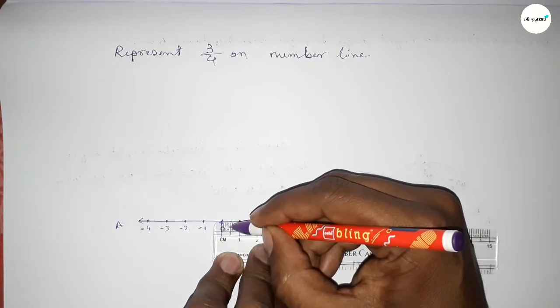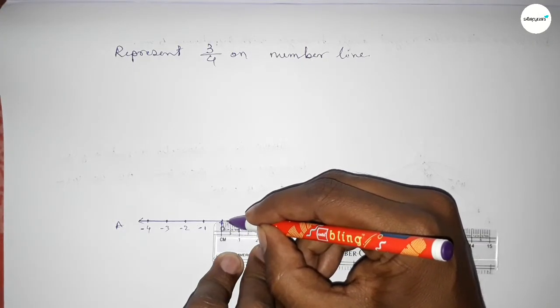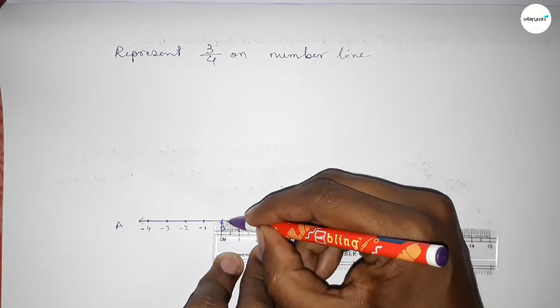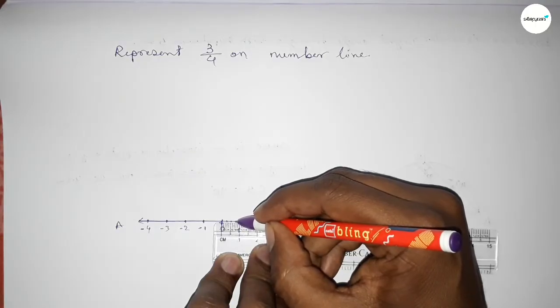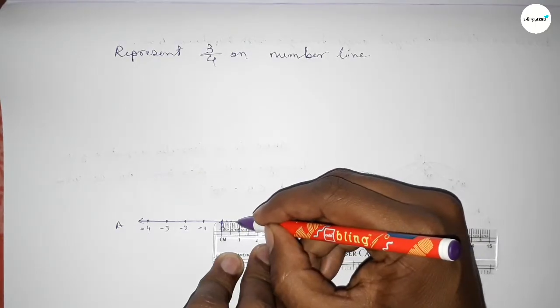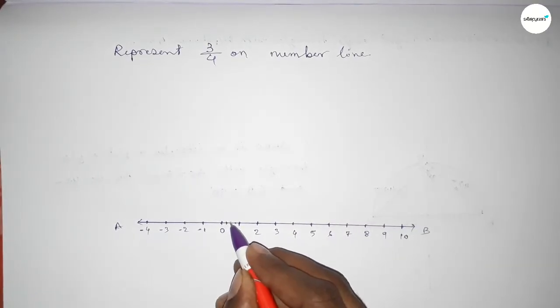Now taking the half between 0 to 0.5, so this is approximately 0.25. Now taking the half between 0.5 to 1, so this is approximately 0.75.